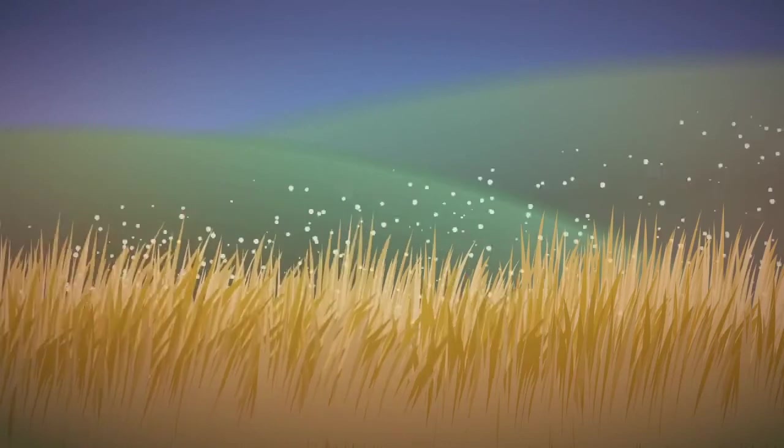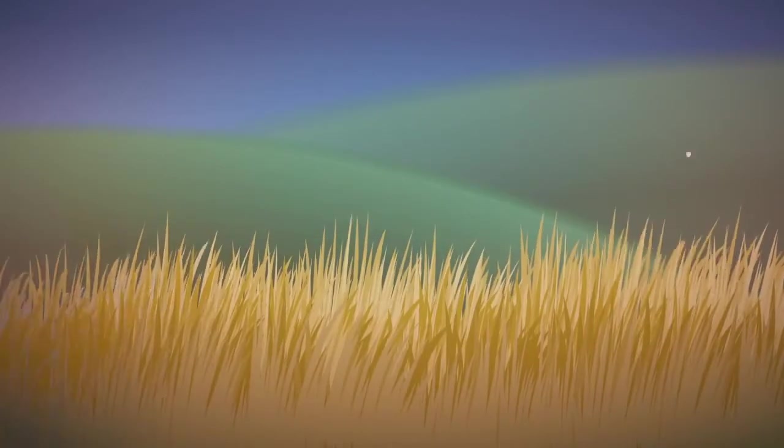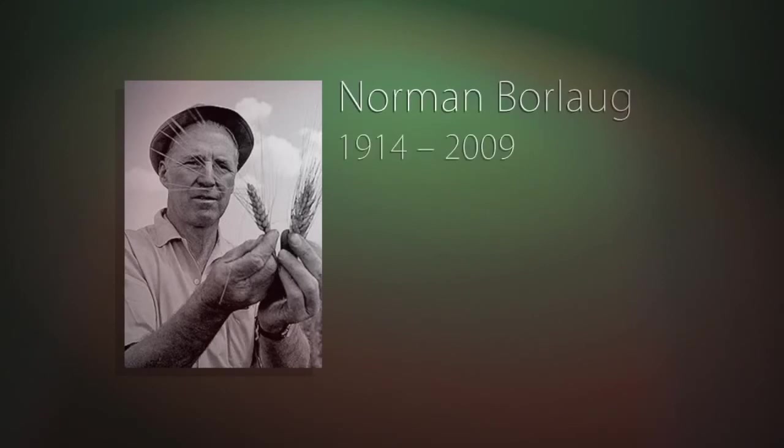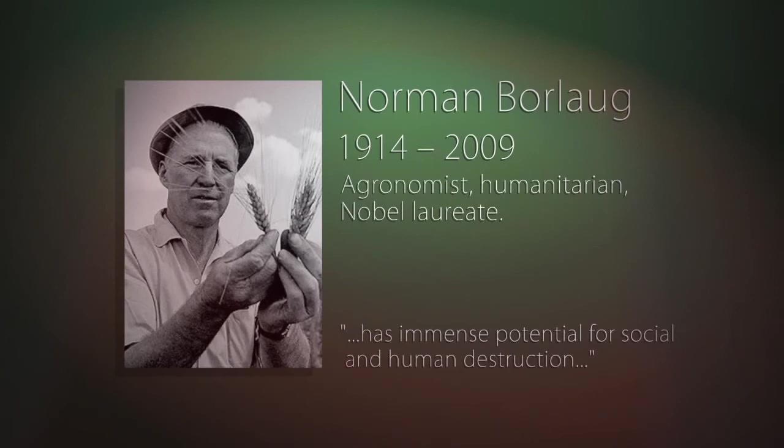Irrigation encourages the growth of stem rust fungi like UG 99, which has the potential to destroy 80% of the world's grain harvest. According to Norman Borlaug, father of the Green Revolution, stem rust has immense potential for social and human destruction.